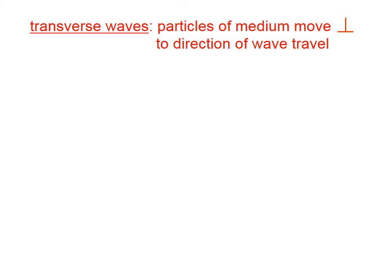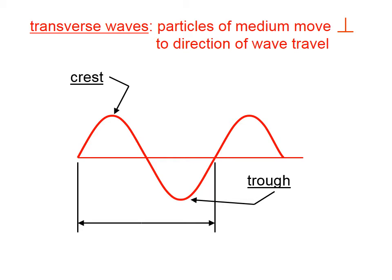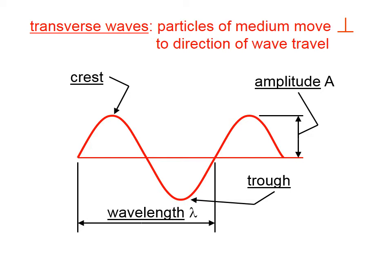In transverse waves, particles of the medium move perpendicular to the direction of wave travel. If we had a rope attached to the wall and we're holding the other end and shaking it up and down, the rope at any given instant might have a shape like what we see here. The top of that rope would be considered the crest, and the bottom is called the trough. This distance shown here is the wavelength, abbreviated with the lowercase Greek letter lambda (λ). Wavelength could also be measured from crest to crest or from trough to adjacent trough. That distance shown is called the amplitude — the distance from equilibrium to a point of maximum displacement.